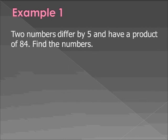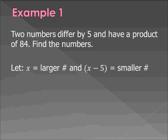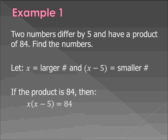All right, example one. Two numbers differ by 5 and have a product of 84. Find the numbers. So let's start by labeling our variables. We'll call x the larger number and x minus 5 the smaller number. So if the product is 84, we just have to multiply them together. So x times x minus 5 is 84.